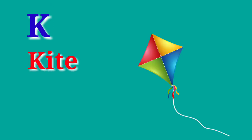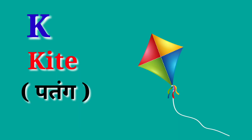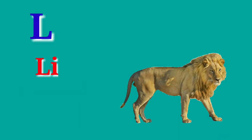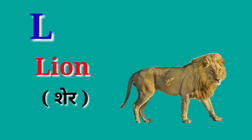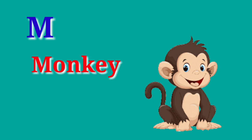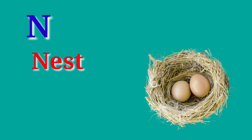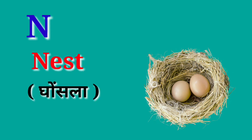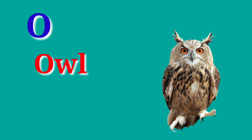K for kite, kite means patang. L for lion, lion means share. M for monkey, monkey means bandar. N for nest, nest means ghosla. O for owl, owl means ullu.